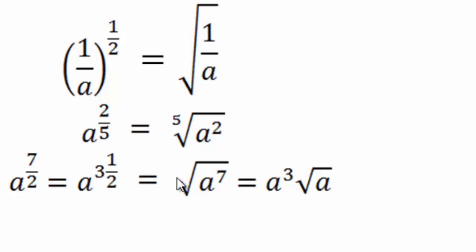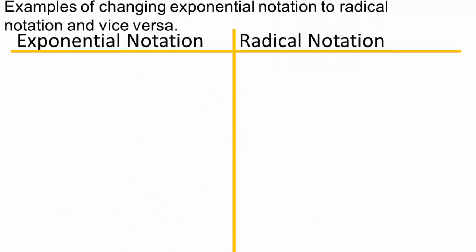So square root of a to the seven is the same as a to the third times square root of a. So this allows you to simplify roots, simple roots. So two is the index here, but remember when it's the index of two, we don't write it, right? We just say it's square root. So again, two is the index, and a to the seven is the radicand.